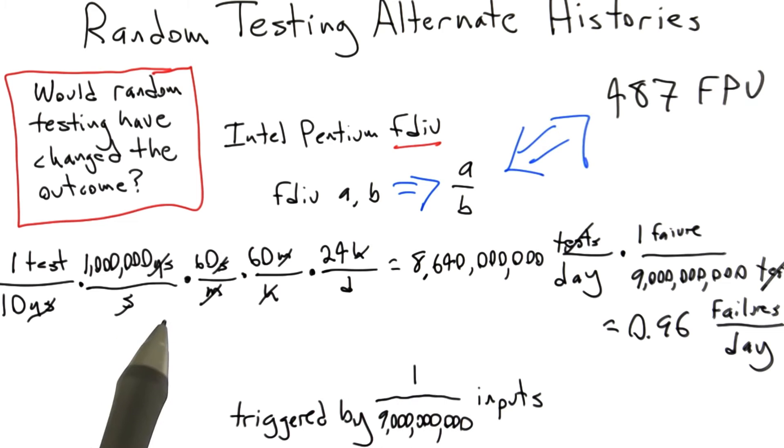So we ask ourselves what would have been the oracle for fdiv, and probably it would have been Intel's existing 487 floating point unit, which had been around for some years by the time they were developing the Pentium.